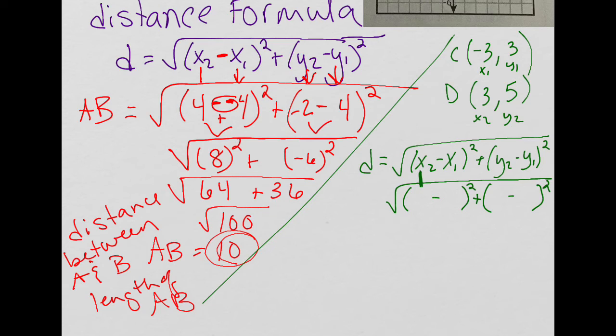So the first one is X2, which is 3. X1, which is negative 3. Y2, which is 5. And Y1, which is 3.